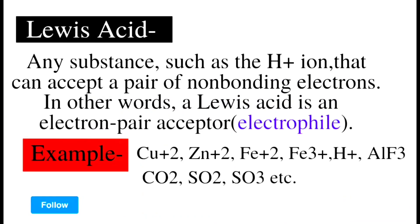Now one more chemist has given his theory about acids. This is Lewis. According to Lewis, Lewis acid is any substance such as the hydrogen ion that can accept a pair of non-bonding electrons. The substance that accepts a pair of non-bonding electrons is called electron pair acceptor and they are also called electrophile. Here you can see some examples like H+, Zn2+, Fe2+, Fe3+. These electron pair acceptors are called Lewis acid.